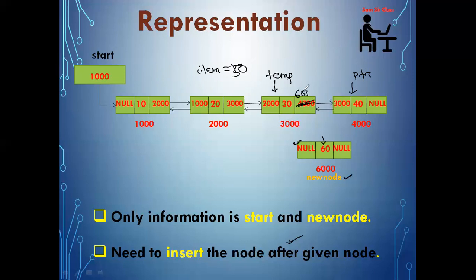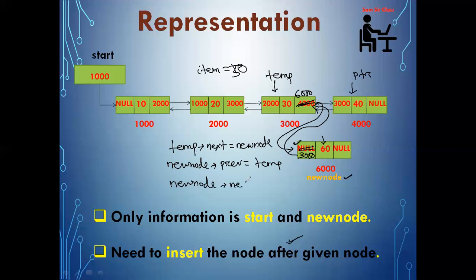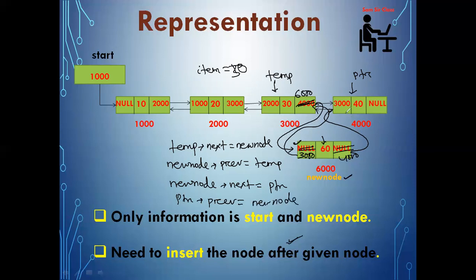I need 6000 inserted here so that this connection will be established. I'll write temp->next equal to new node. Similarly, new node needs to connect back, so instead of null I need to keep 3000 there — so I write new_node->prev equal to temp. Now the connection between temp and new node has been established. Next, I'll connect new node to PTR: new_node->next equal to PTR, keeping address 4000 there. Finally, since this is a doubly linked list, I need PTR->prev equal to new node, so instead of 3000 I'll keep the address of 6000 — connecting it in reverse order.